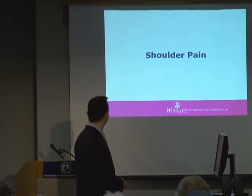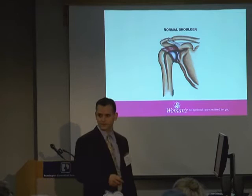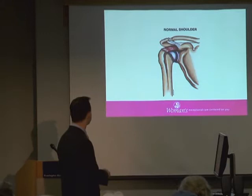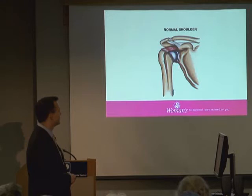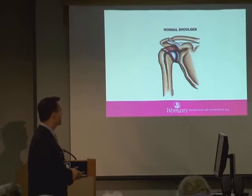The shoulder is a joint — a ball and socket joint made of the humerus bone, the arm bone, which comes together with the shoulder blade. They come together at the shoulder joint, and where they meet there's a cartilaginous surface — a smooth gliding surface that allows for a smooth range of motion.